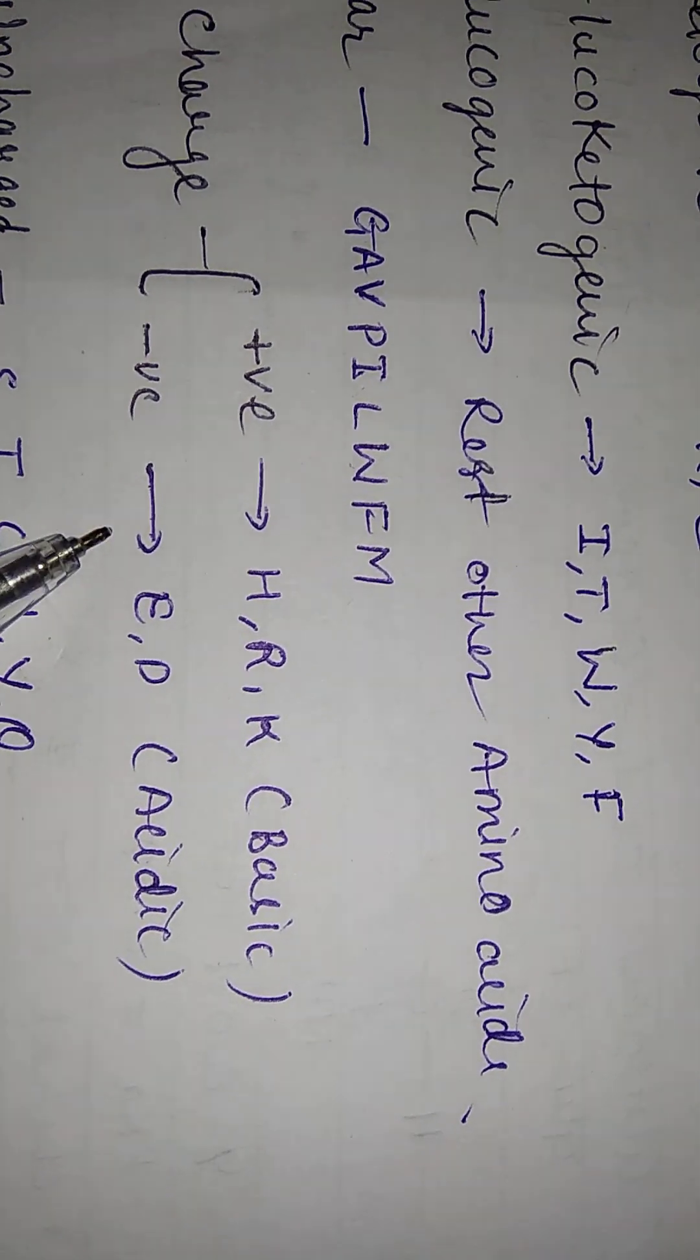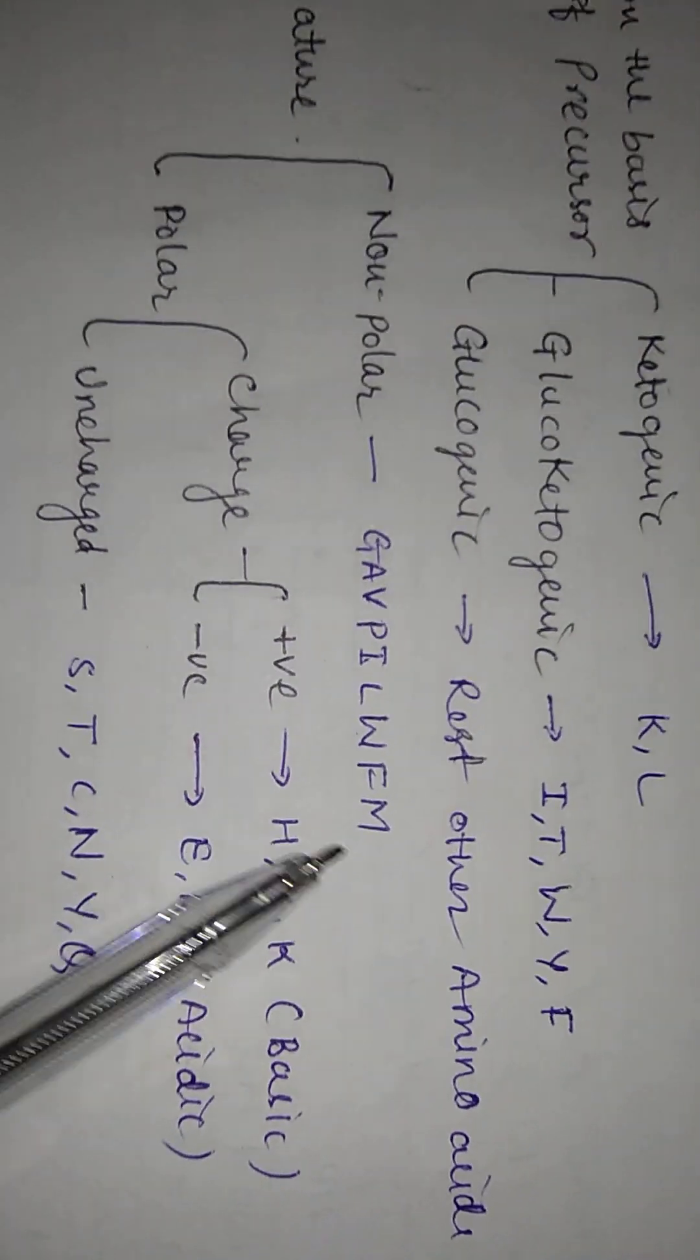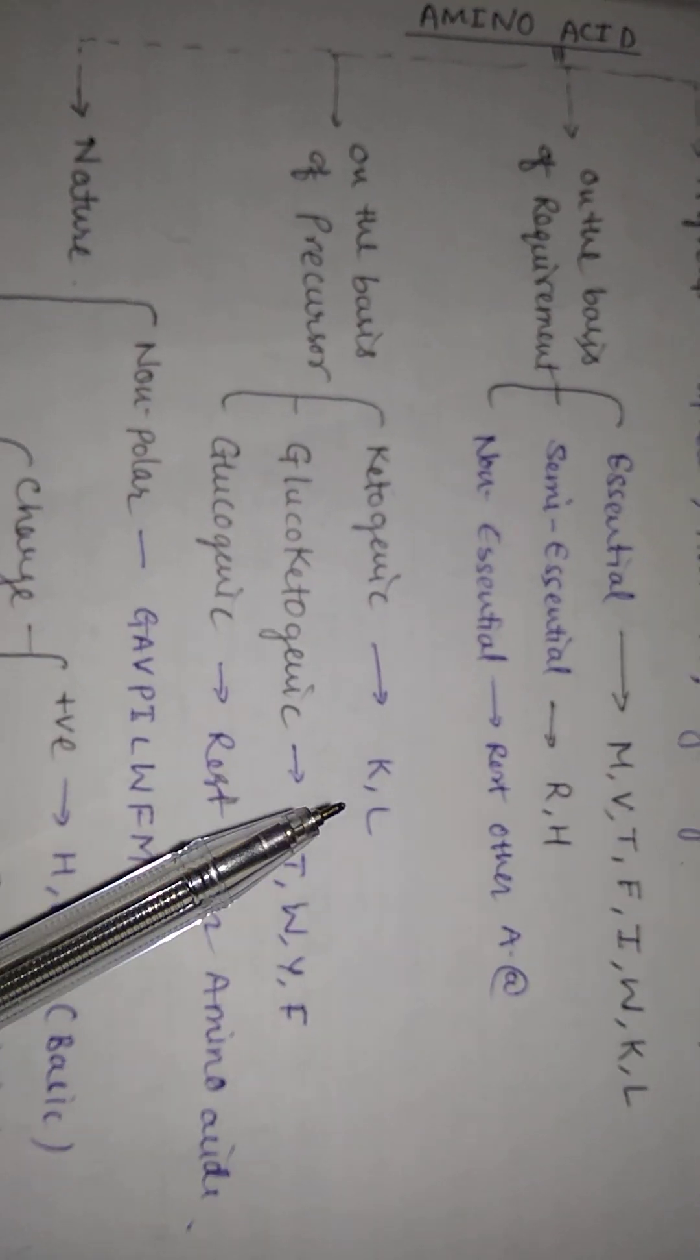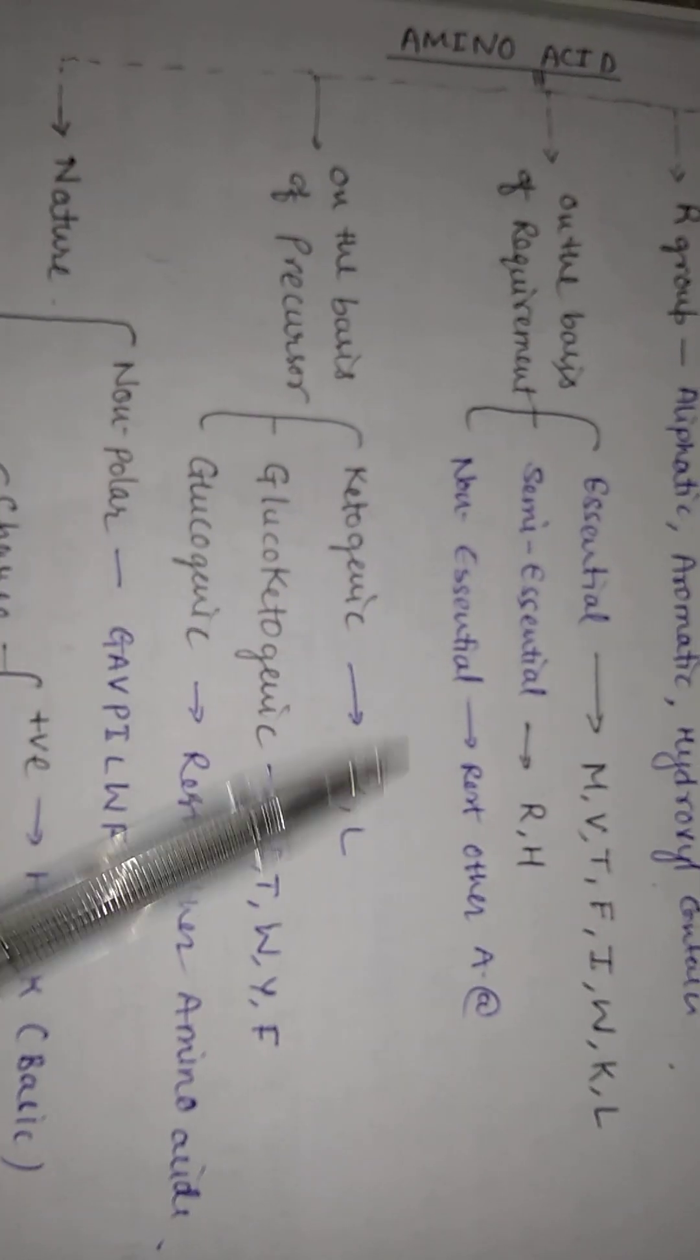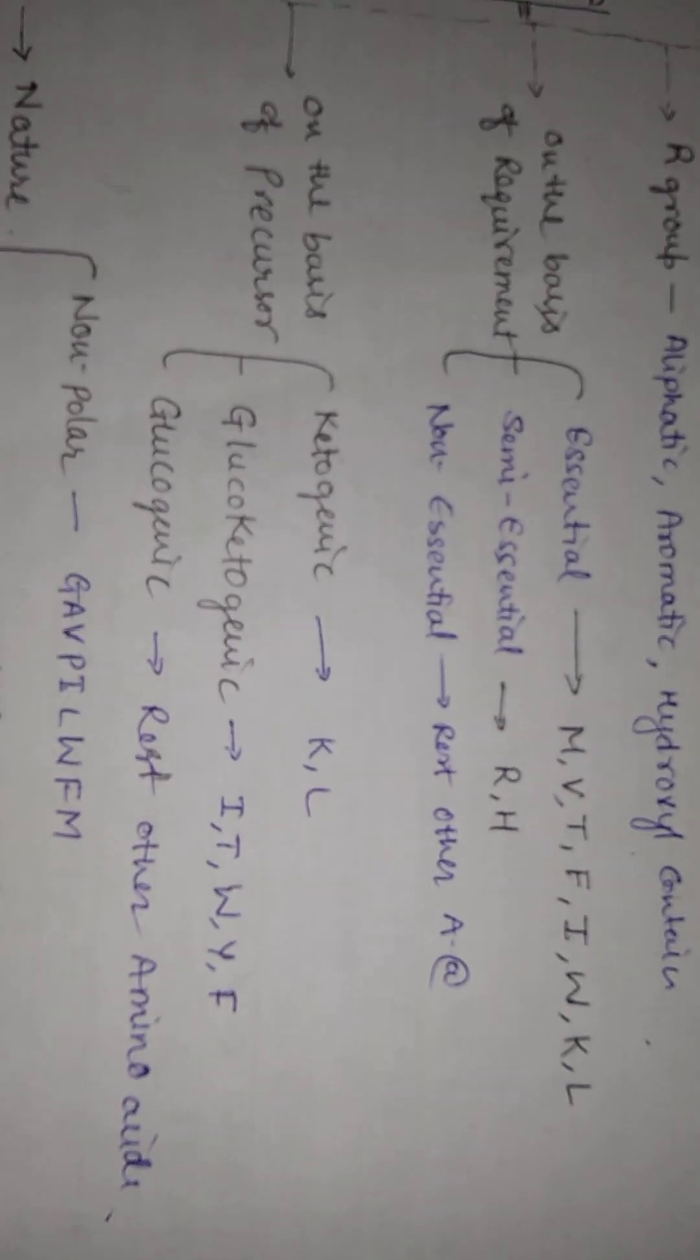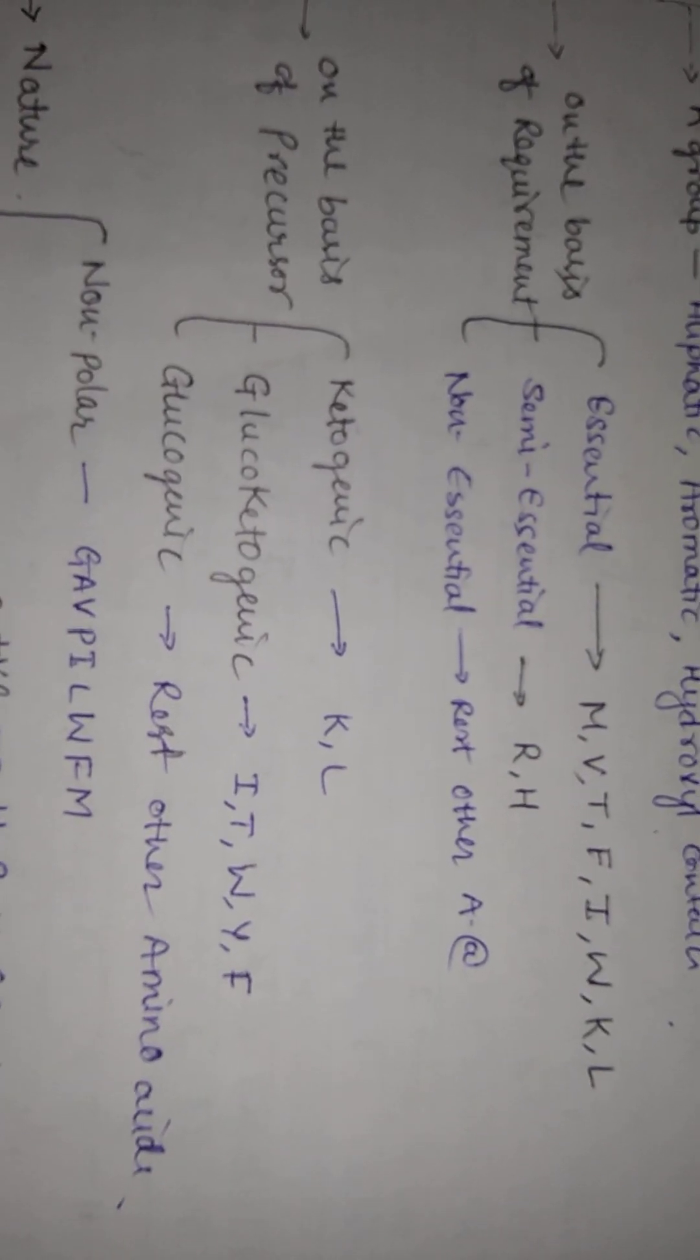Glutamic acid and aspartic acid. So this is our quick overview of amino acids, on which basis we can divide and which types we can classify. Thank you.